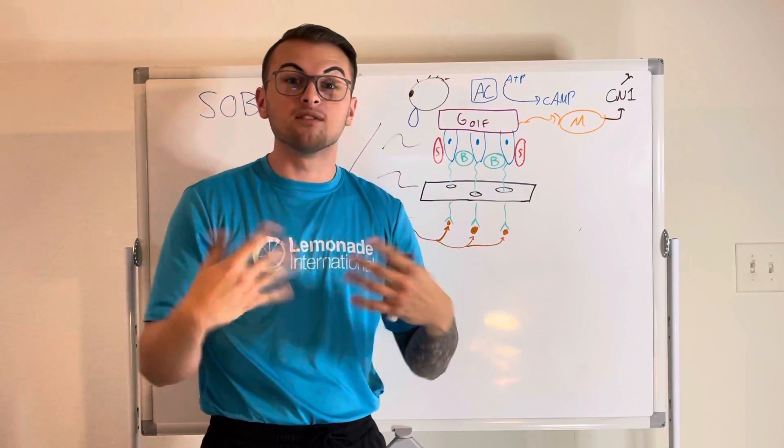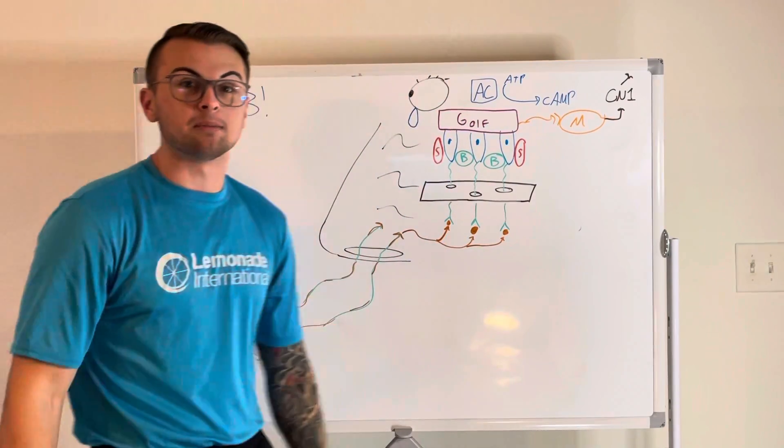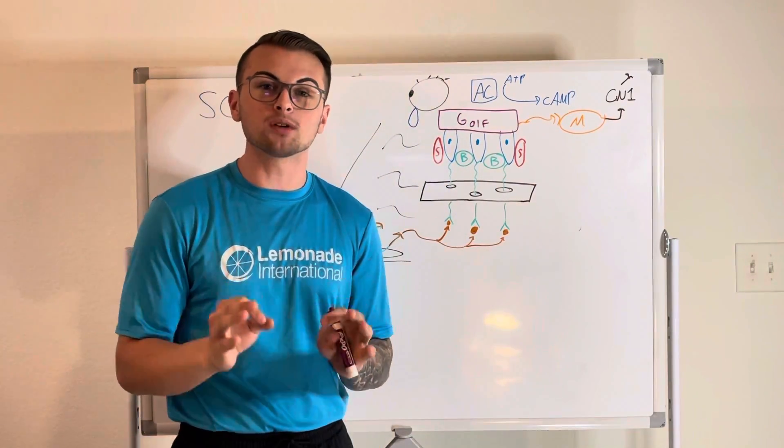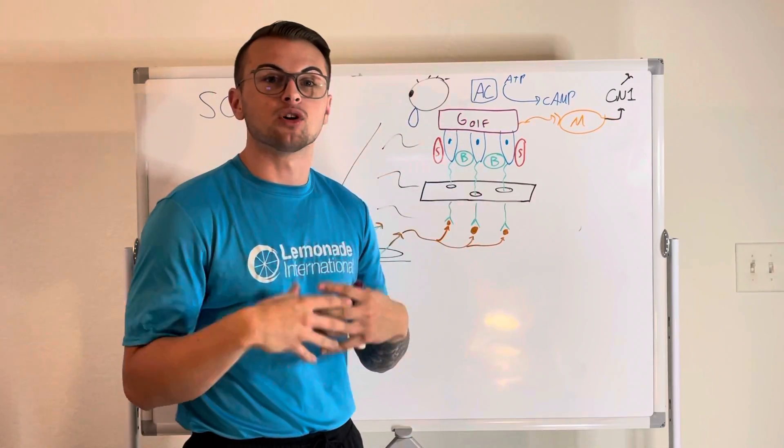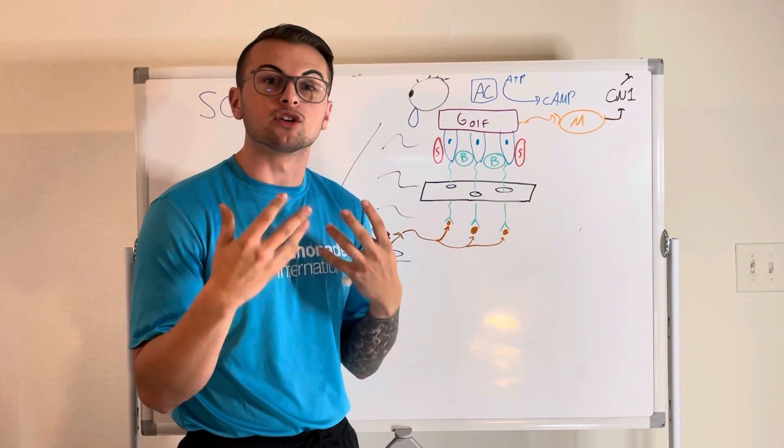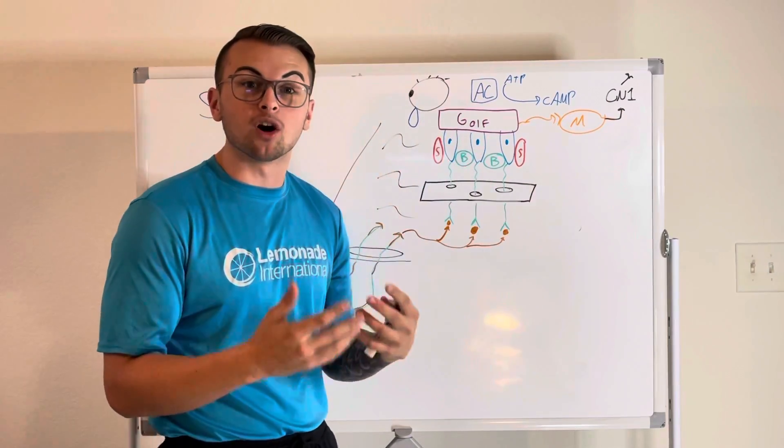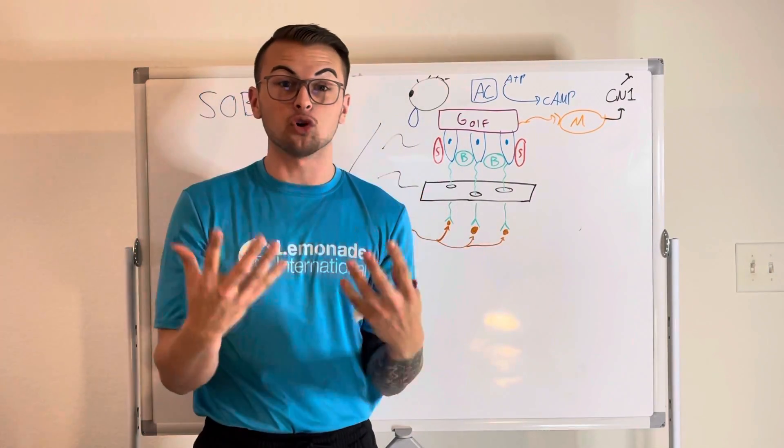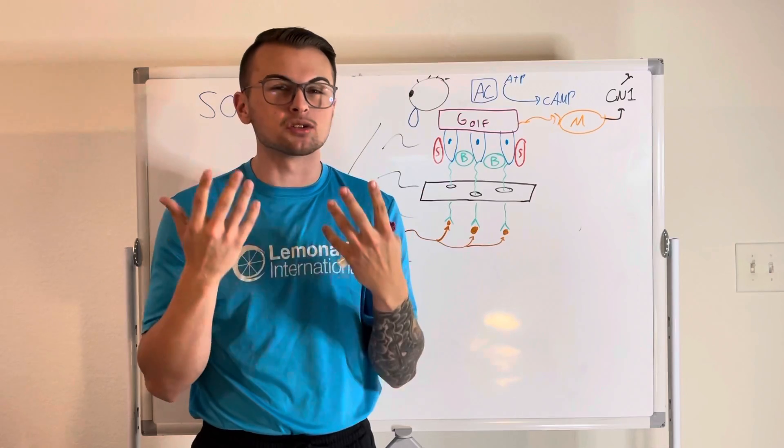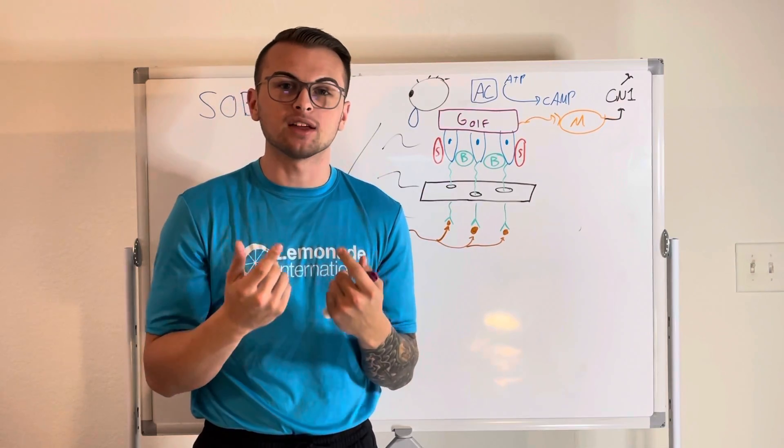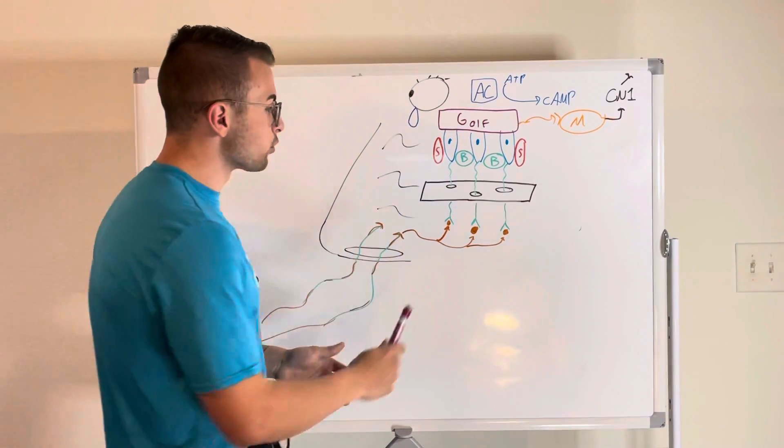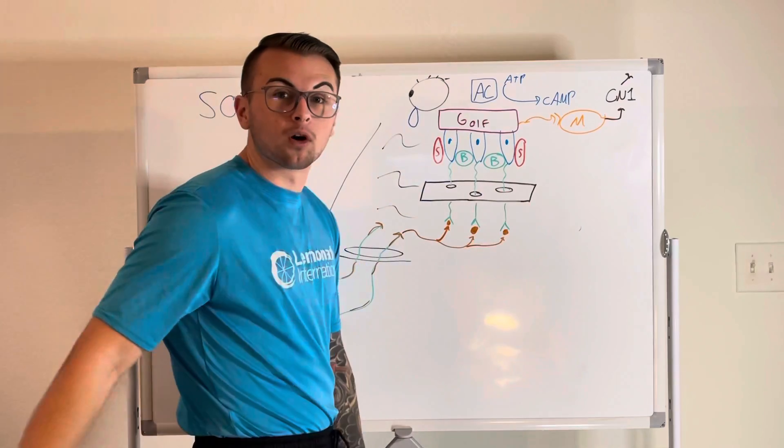So now it's important to know that these olfactory receptor neurons are on our turbinates. But to enter the brain, we know that our brain has a skull around it. So it has to enter the skull in some way. How do they do this? Well, they enter through this porous cribriform plate.